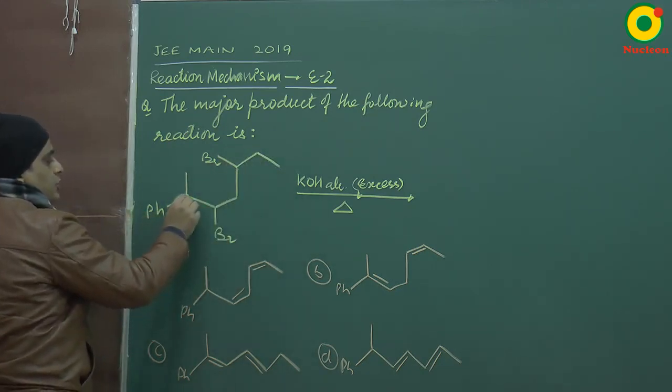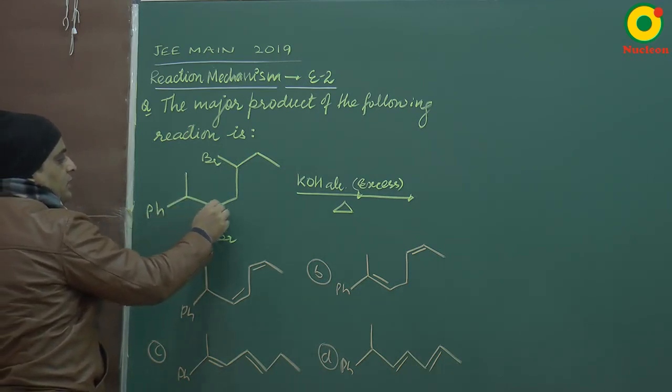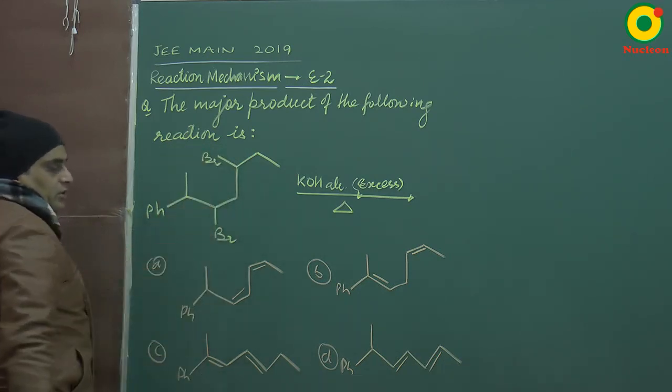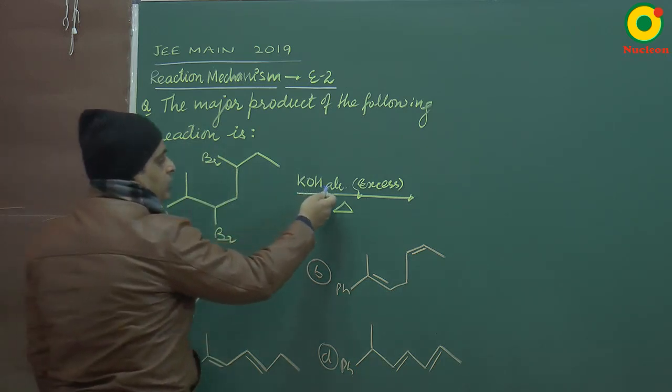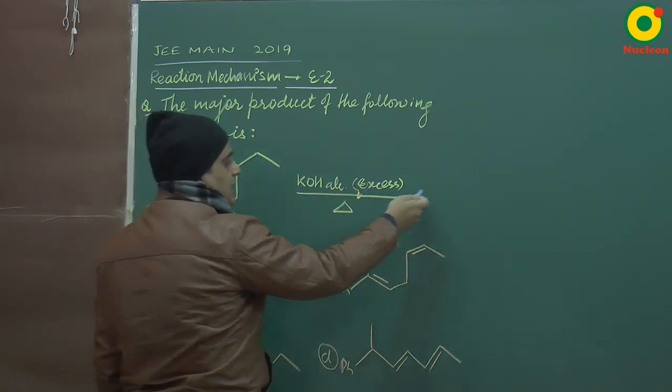There is a chain of carbon in which 2 is phenyl, 3 and 5 is di-bromo. In the excess of the alcoholic KOH, what is the product?